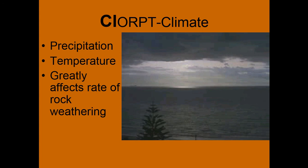So CLORPED — the first one is climate: the precipitation patterns, temperature patterns. These greatly affect the rate of rock weathering. If you have a cold but dry area, you don't have as much ice action, but if you have high levels of precipitation and temperature fluctuation, then we get a lot more ice action, just as an example.